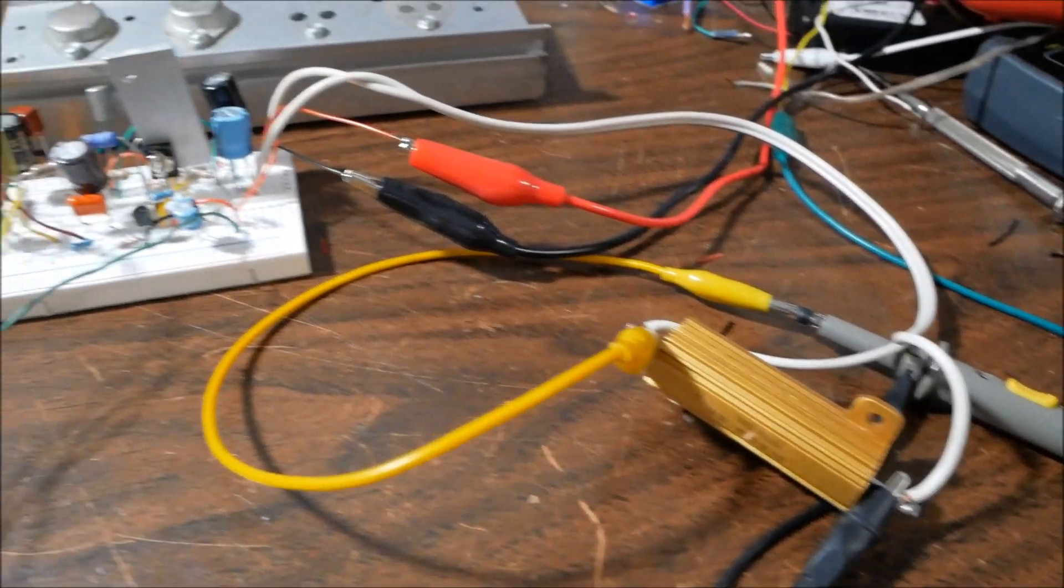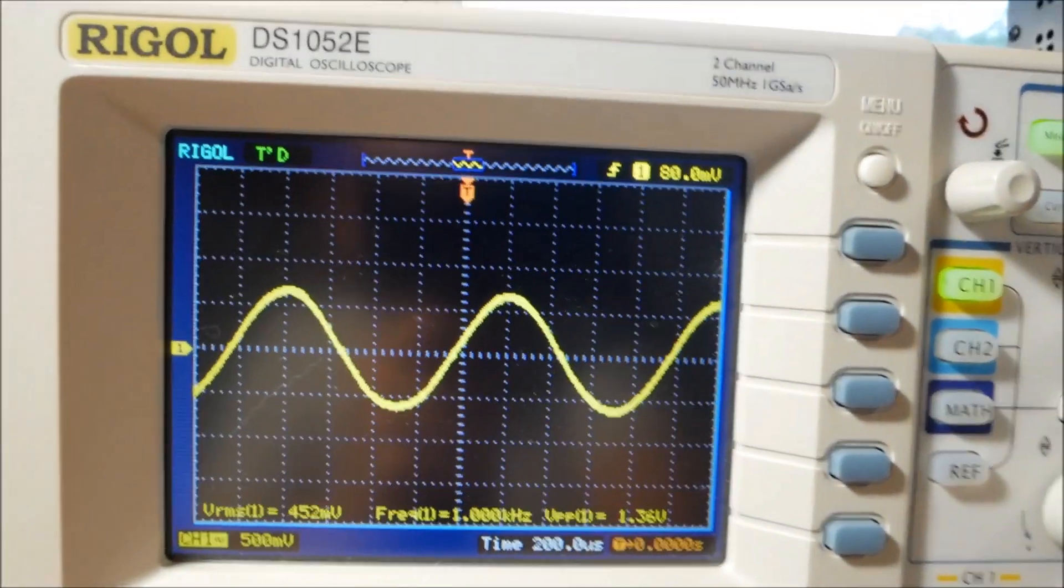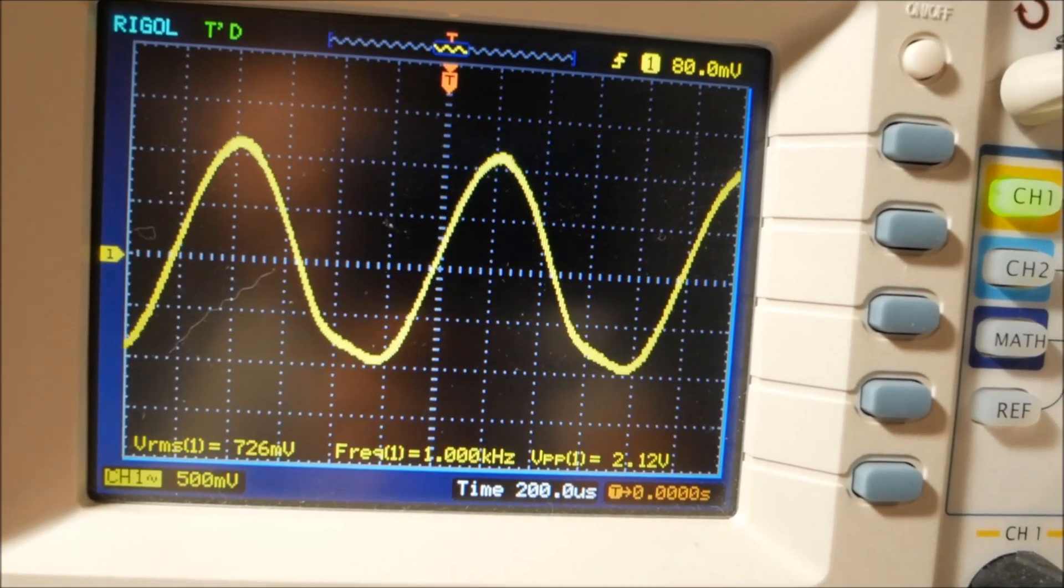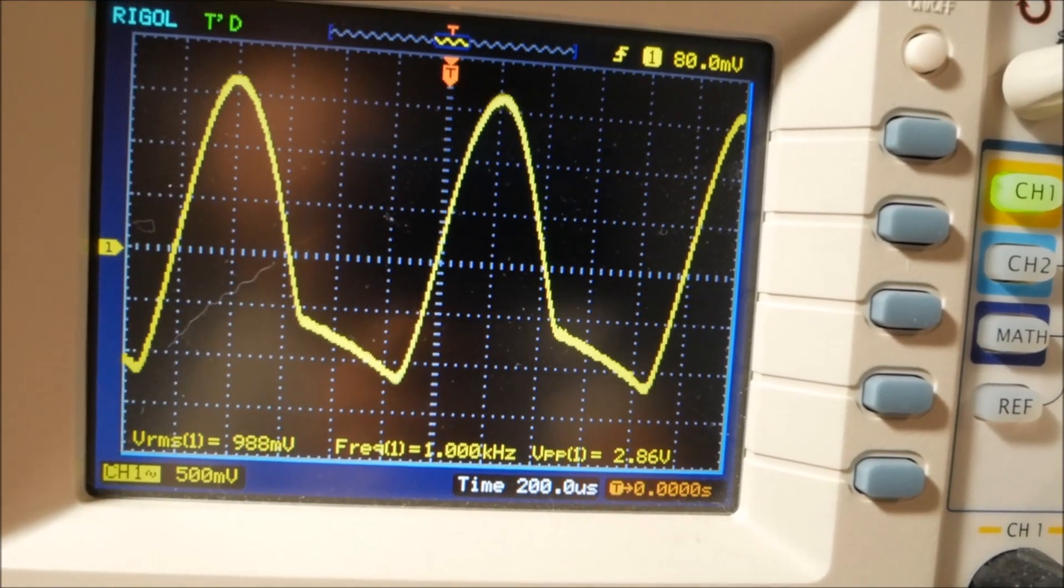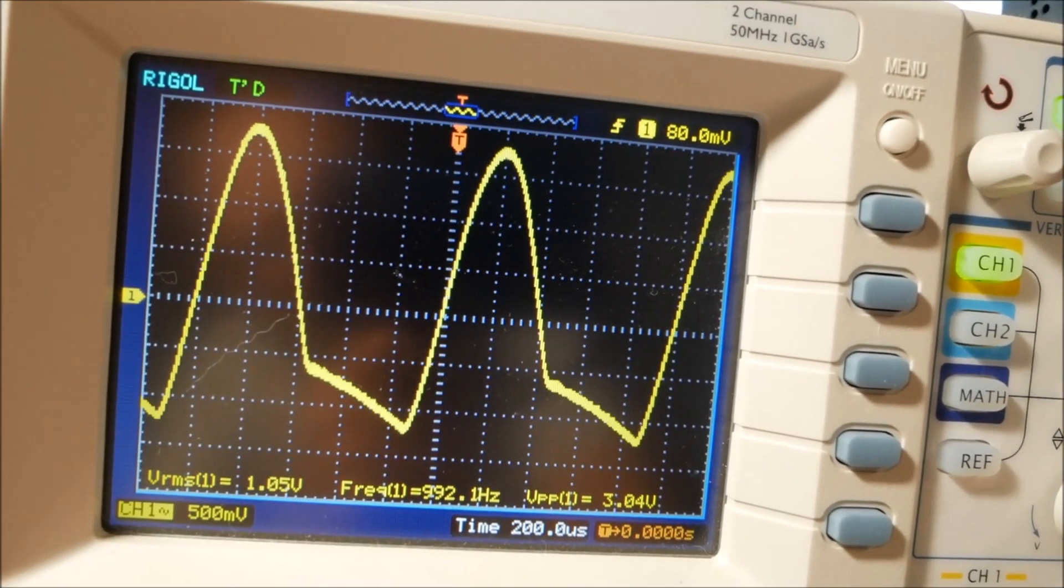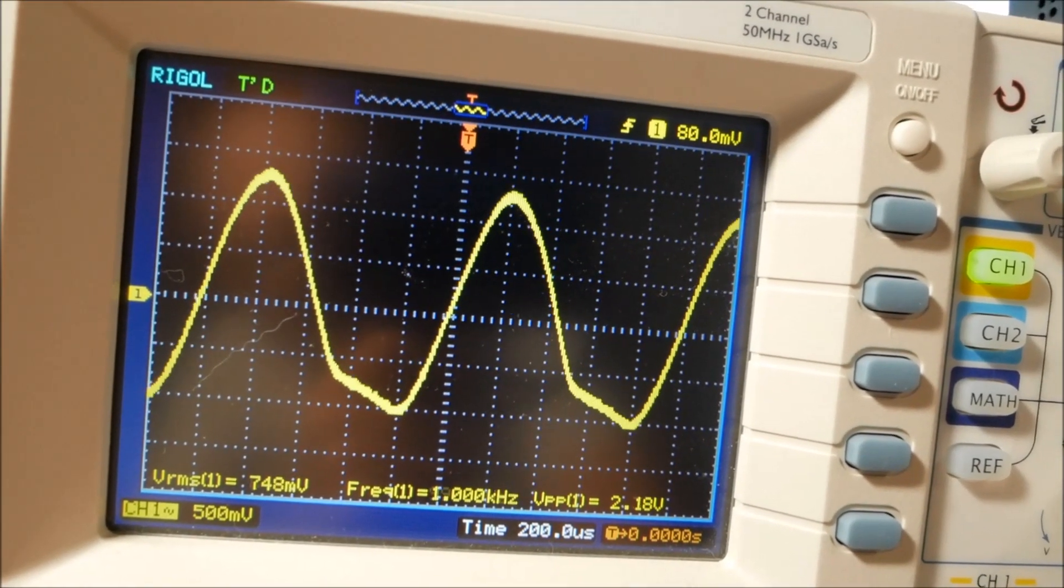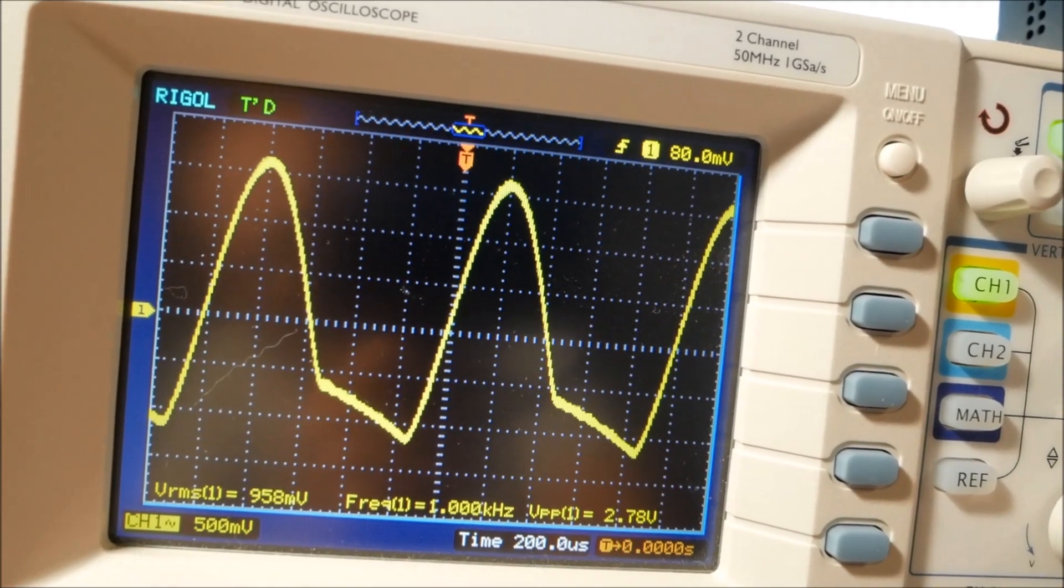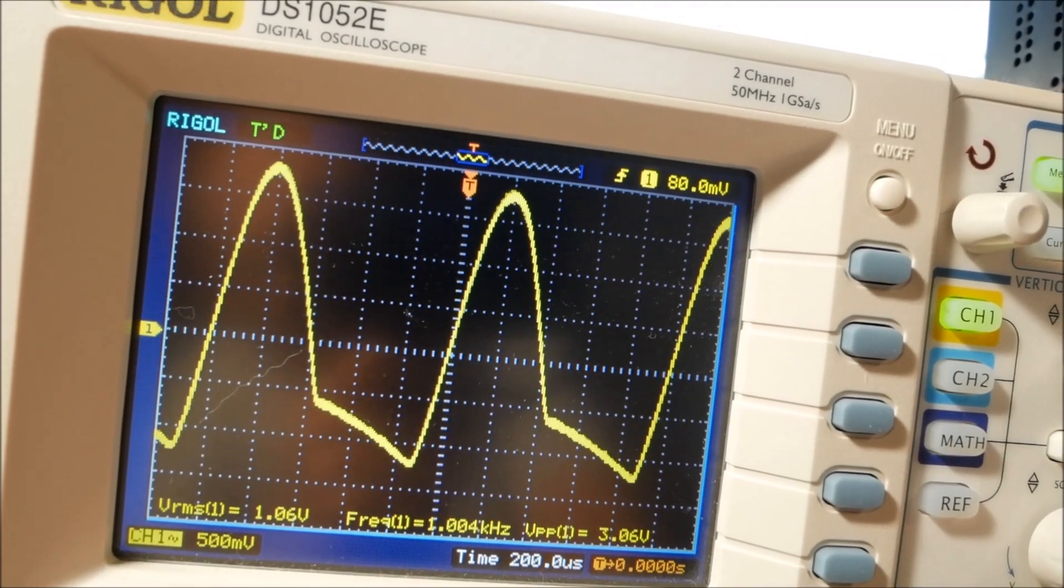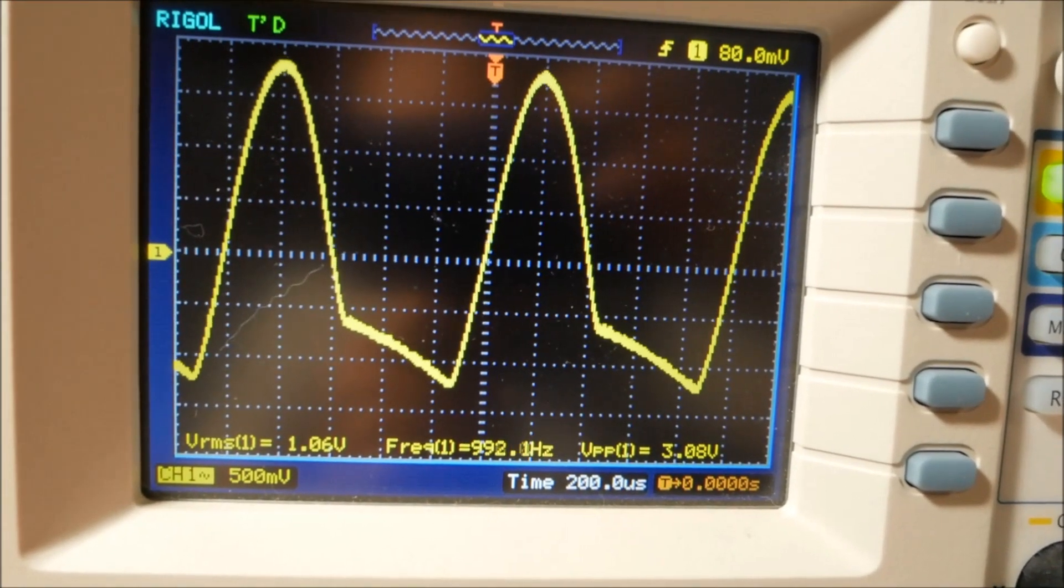I've hooked the 8 ohm load up to the output of the amplifier, scoping across the load. Everything looks fine and dandy until I turn the signal up. Look at that. So we have a biasing issue here I need to resolve. We're not even a volt RMS of output yet and it starts clipping off the bottom there.